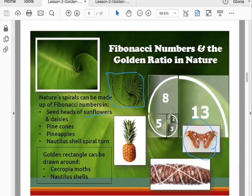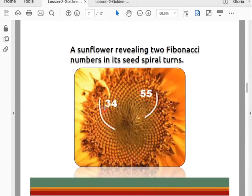So this sunflower reveals two Fibonacci numbers in its seed spiral turns. We have 55 spiral turns going in this direction and 34 spiral turns going in the opposite direction. Why don't you go ahead and draw a few spiral turns - maybe draw two lines going in this direction and two lines going in the left-hand direction. Those of you watching the recording, just go ahead with your finger and draw those lines.